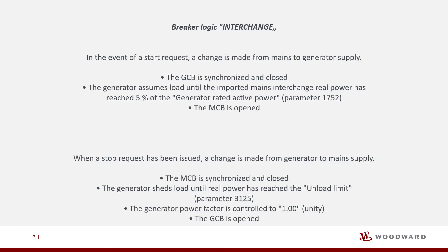The engine is shut down following the configured cool-down period. Breaker logic interchange: in the event of a start request, a change is made from mains to generator supply. The GCB is synchronized and closed. The generator assumes load until the imported mains interchange real power has reached 5% of the generator rated active power, parameter 1752. The MCB is opened. When a stop request has been issued, a change is made from generator to mains supply. The MCB is synchronized and closed. The generator sheds load until real power has reached the unload limit, parameter 3125. The generator power factor is controlled to 1.00 unity. The GCB is opened.